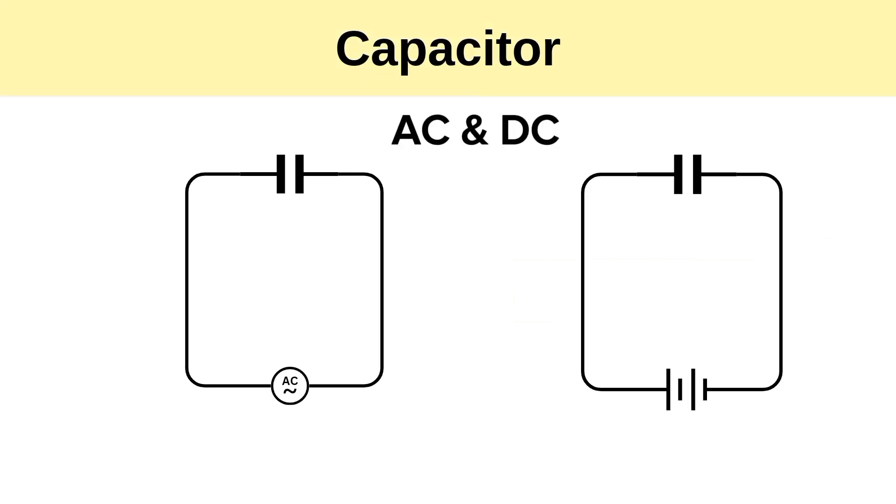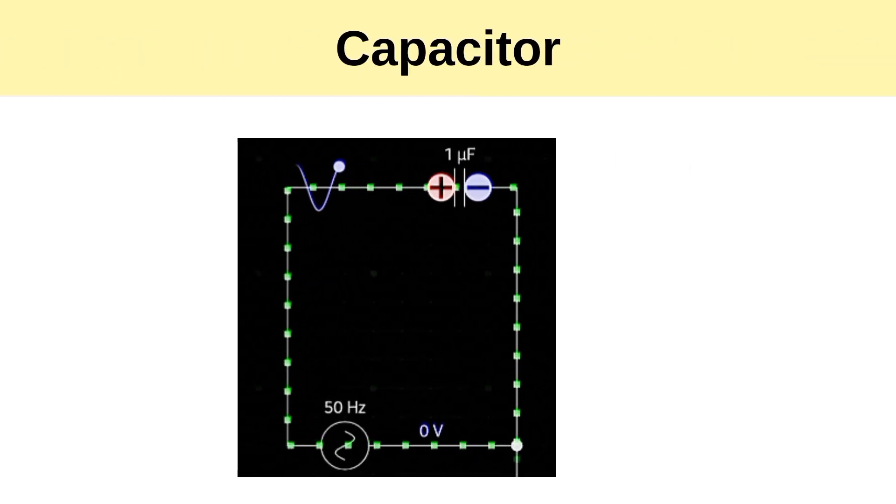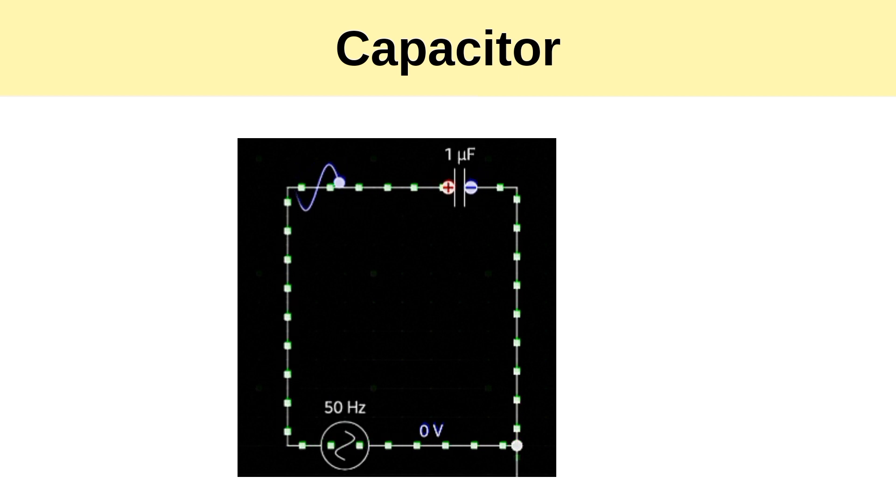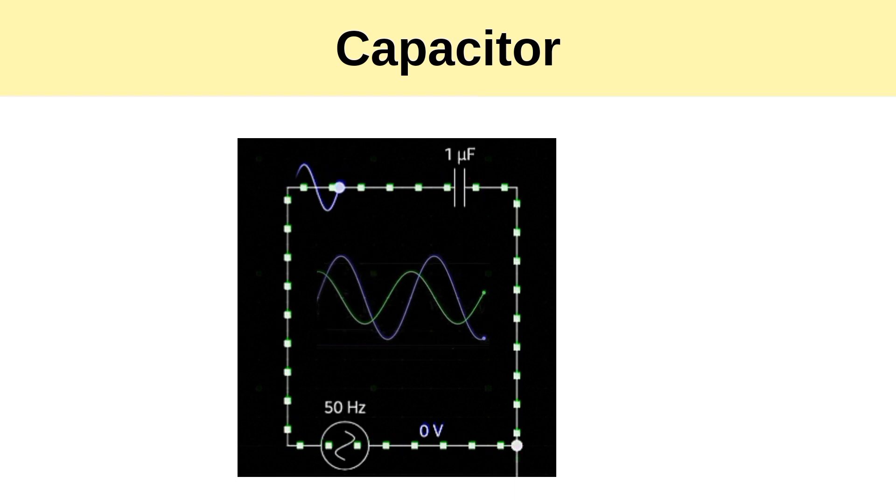Let's see capacitors in AC and DC circuits. In AC circuits, capacitors continuously charge and discharge as the voltage alternates. The rate of charging and discharging depends on the frequency of the AC signal and the capacitance of the capacitor. This behavior leads to phase shifts between the voltage and current in capacitive AC circuits.